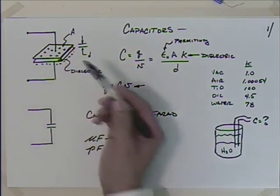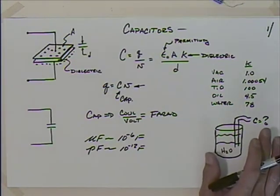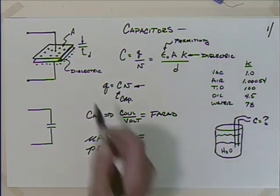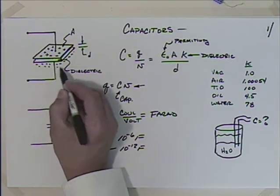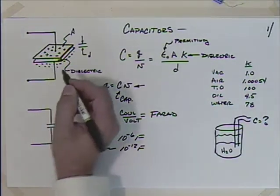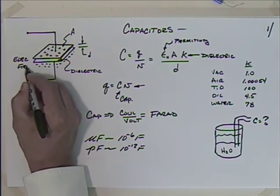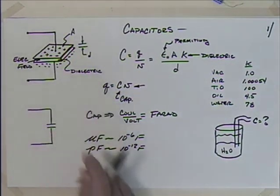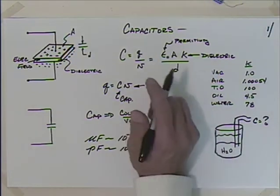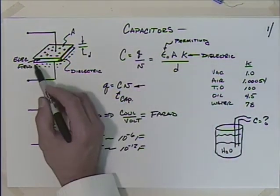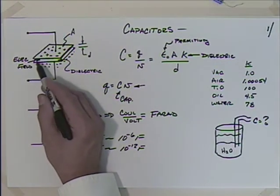To get a one-farad capacitor you'd need plates literally the size of an acre. Most of the time we're a small fraction of a farad. With a charged plate, one side has a positive charge and the other a negative charge, setting up an electric field. Capacitors store energy in that electric field — that's the key difference from resistors, which don't store energy. Inductors store energy in a magnetic field.